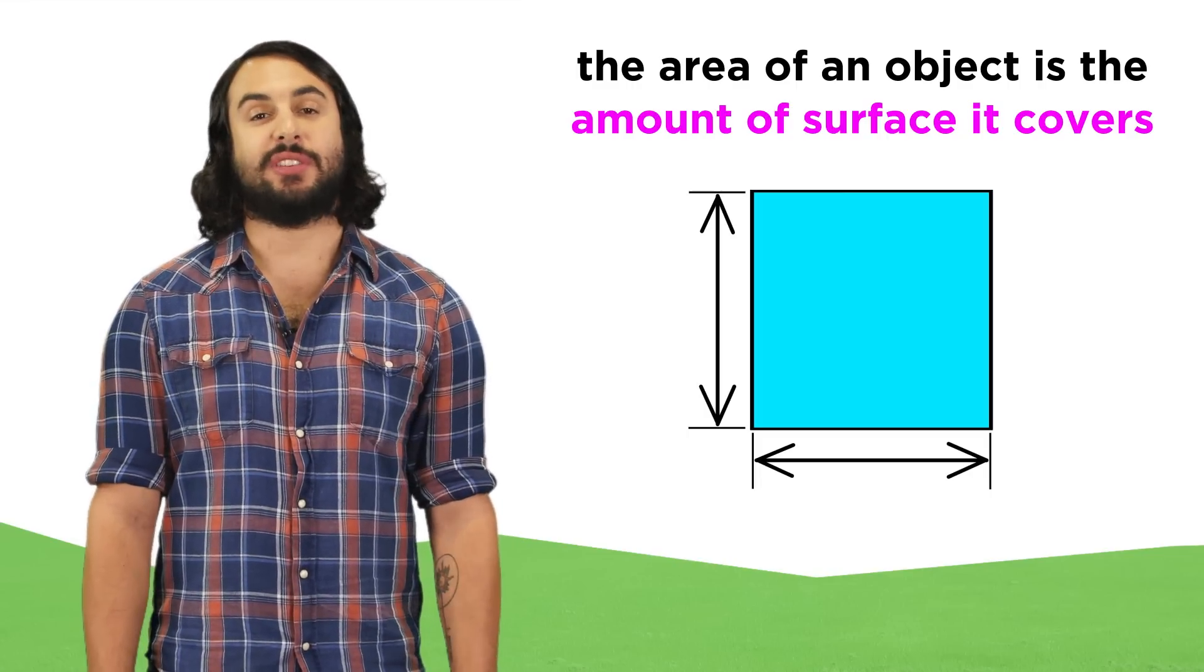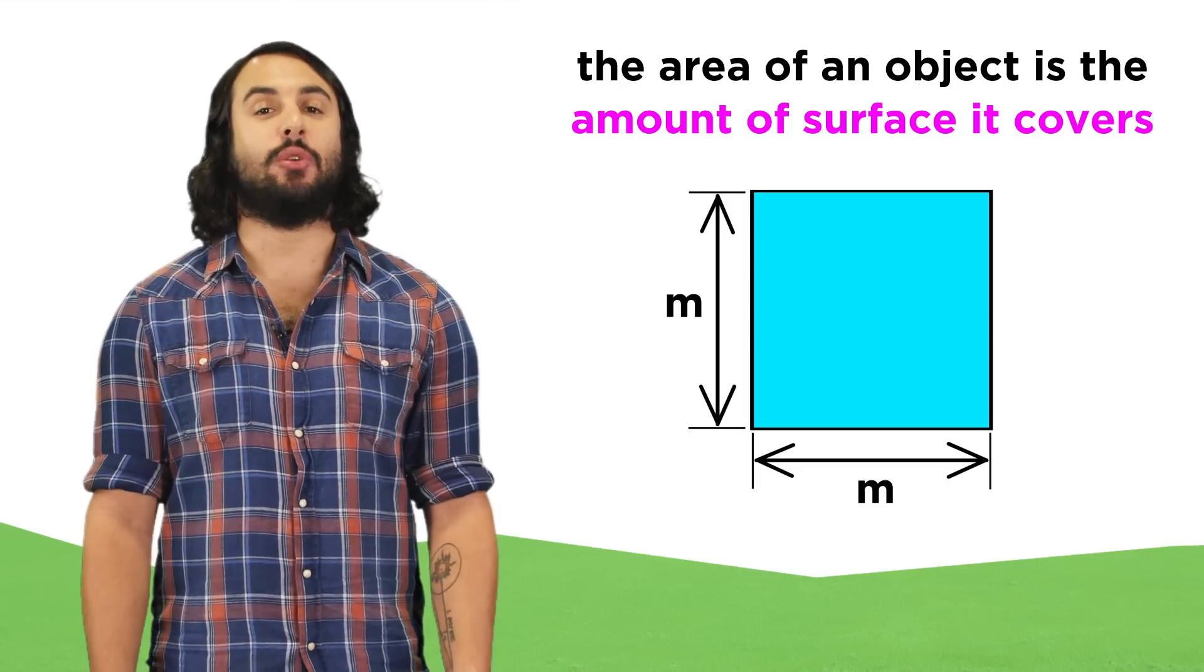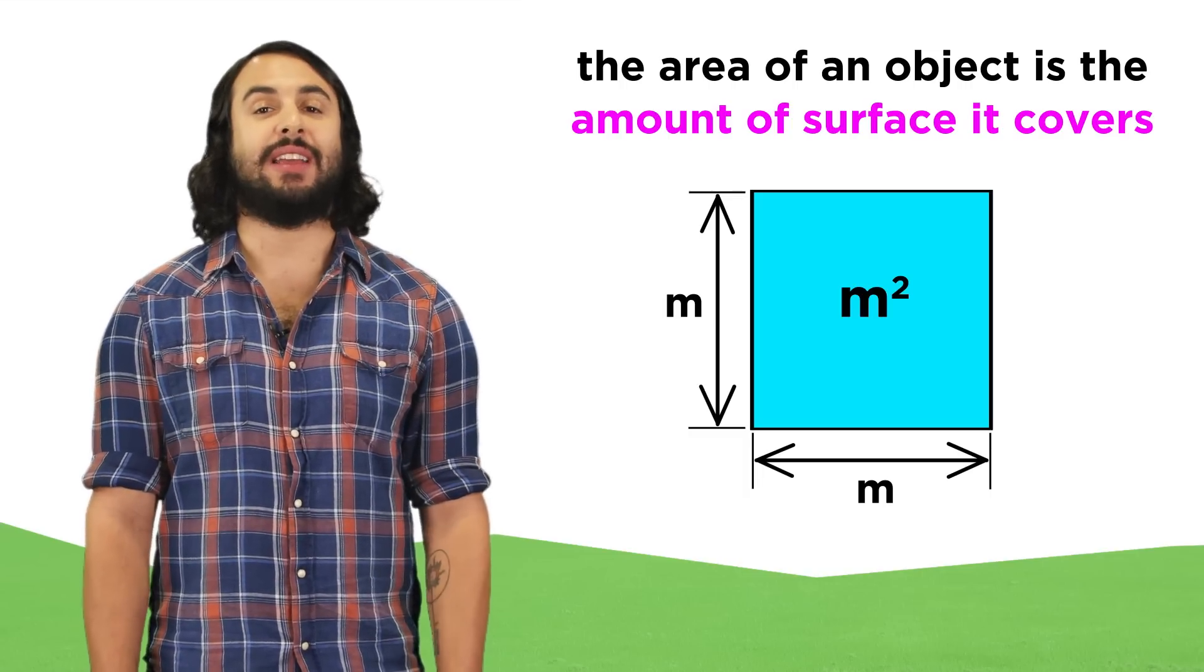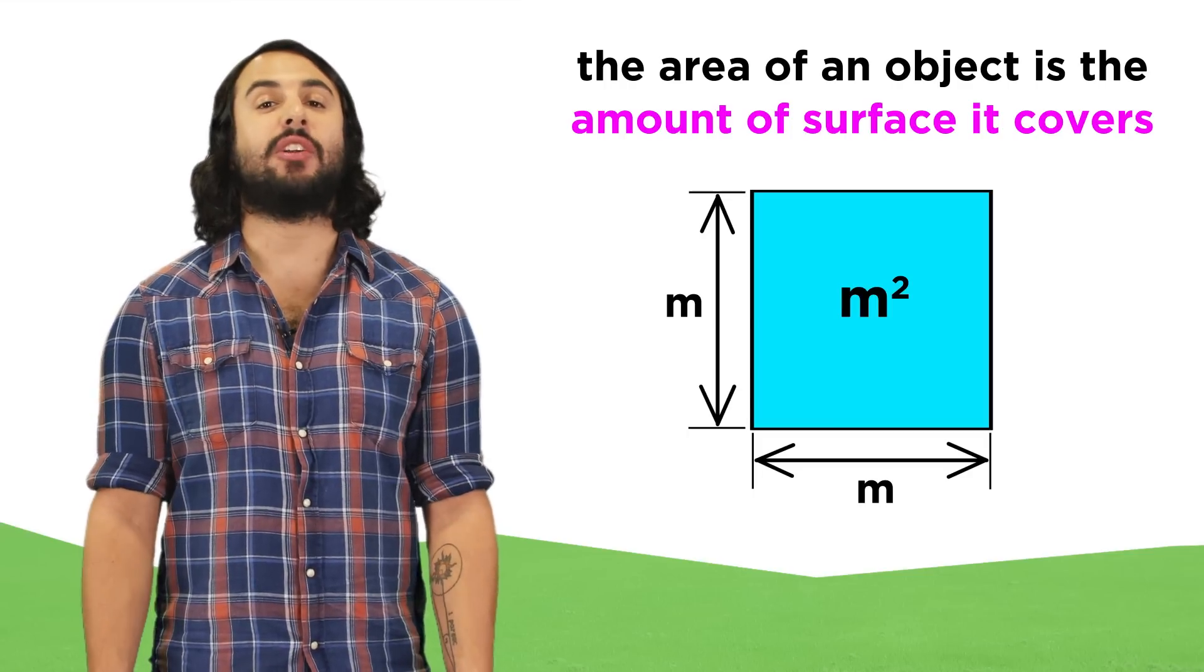We must understand that while side lengths and perimeters can be measured in any unit of distance, like meters, area will be expressed in square units, like square meters, which are meters squared.